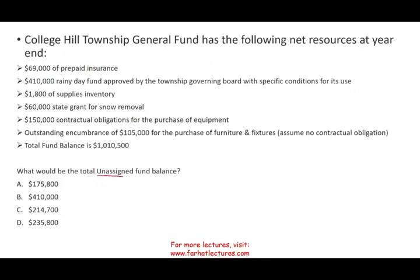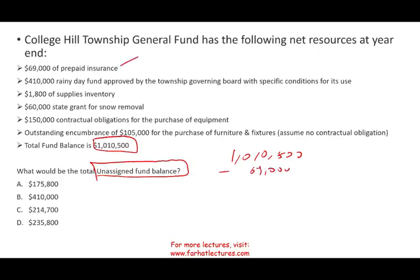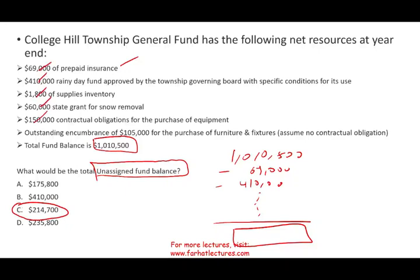What is the total unassigned fund balance? Unassigned means anything that doesn't fit into the other fund balance categories. We have a total fund balance of $1,010,500. Deducting all the non-spendable, restricted, committed, and assigned amounts leaves $214,700 as the unassigned fund balance. Think of this as the money the government can use for anything — the more you have of it, the better, because it can be used to serve the public.